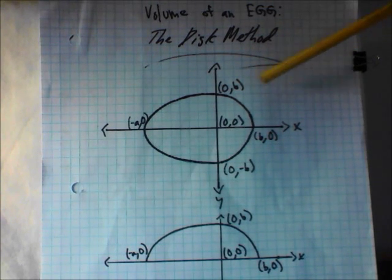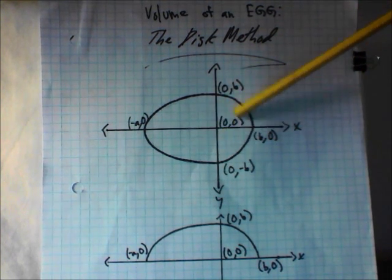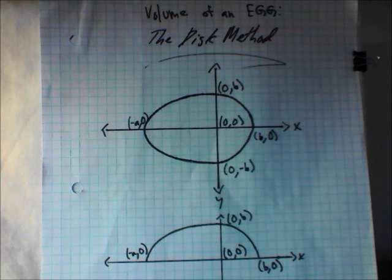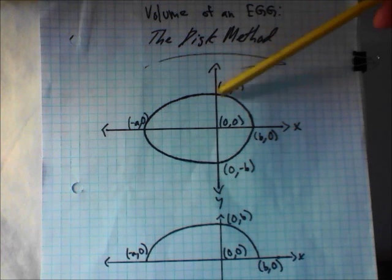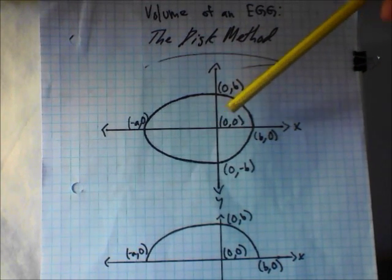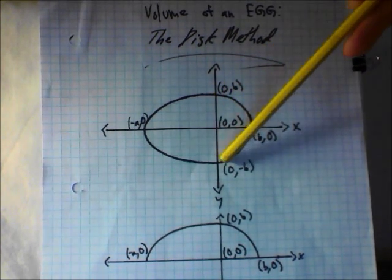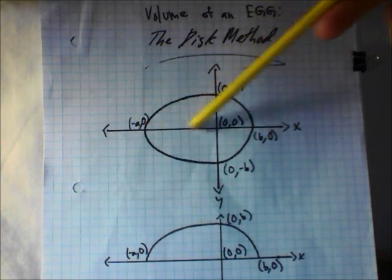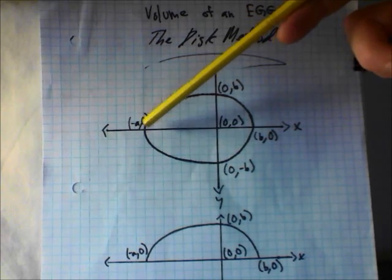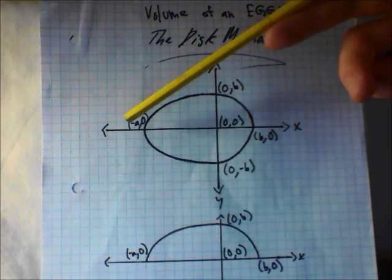When labeling our points on the x and y axes, we first label our origin where the two axes cross. The radius of the half-circle portion is called b, so the points where the egg intersects the y-axis are (0, -b) and (0, b). Where it intersects the x-axis on the right side is (b, 0), since that radius is constant around the circle. The length of the half-ellipse is called a, so the tip of the egg on the x-axis is labeled (-a, 0).